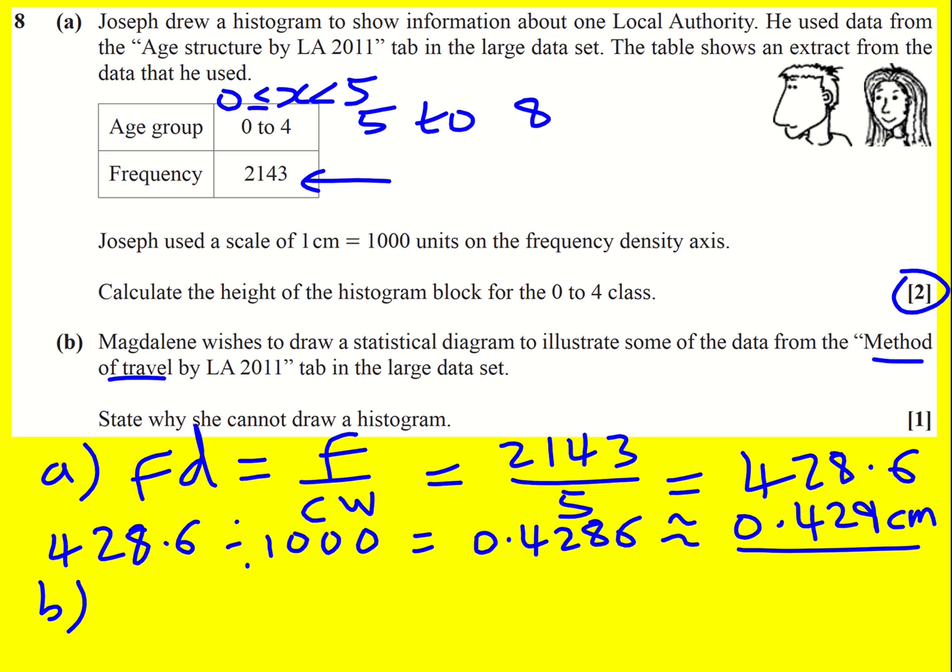method of travel is going to be things like driving a car, going on the bus, going by train. This is not continuous data and a histogram uses continuous data, so something along the lines of the method of travel will be discrete data.